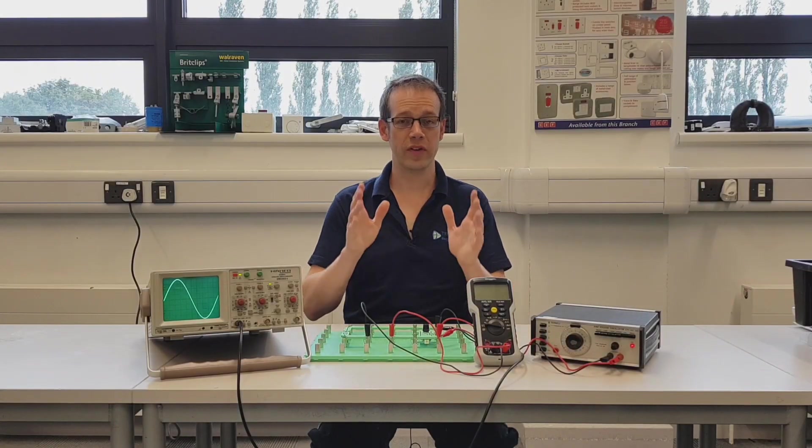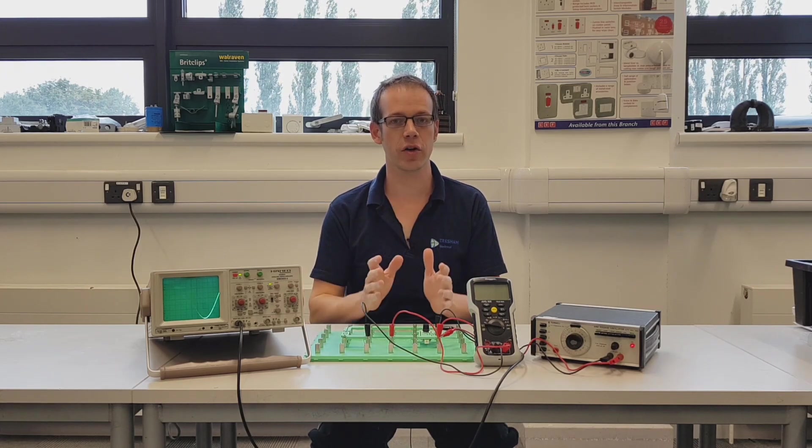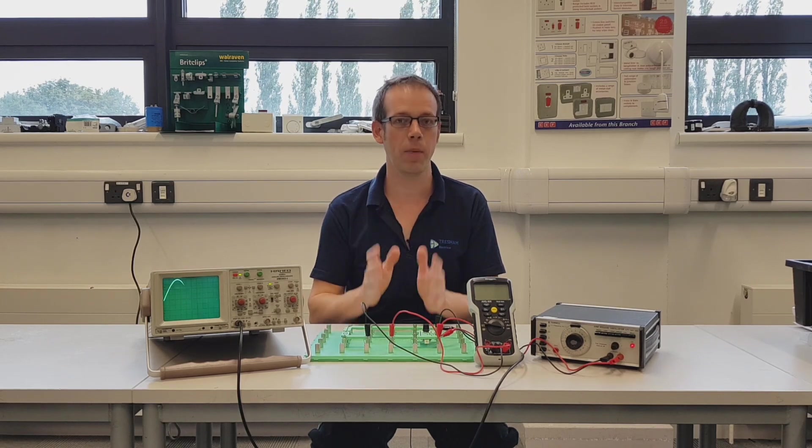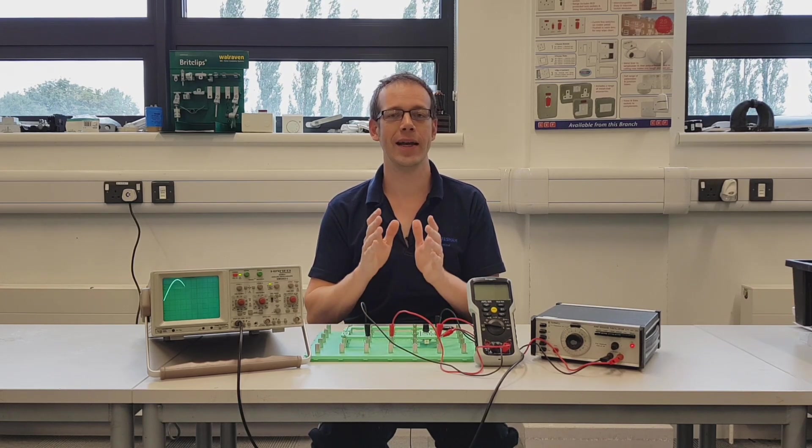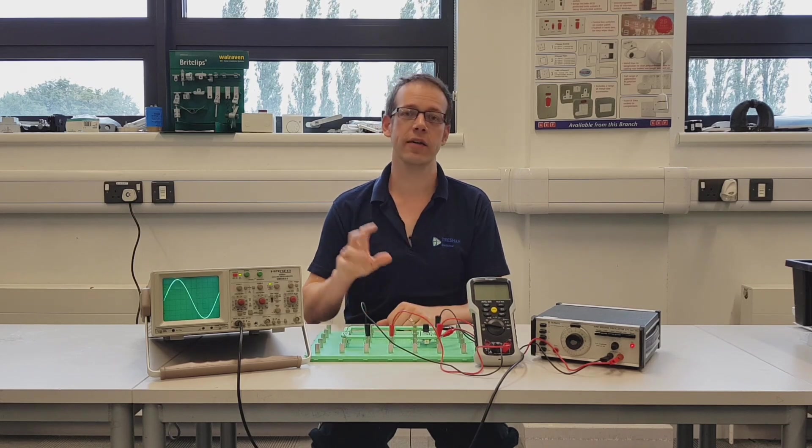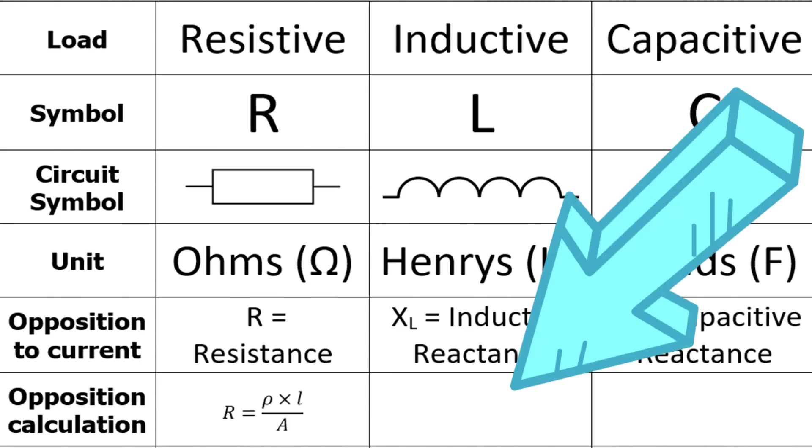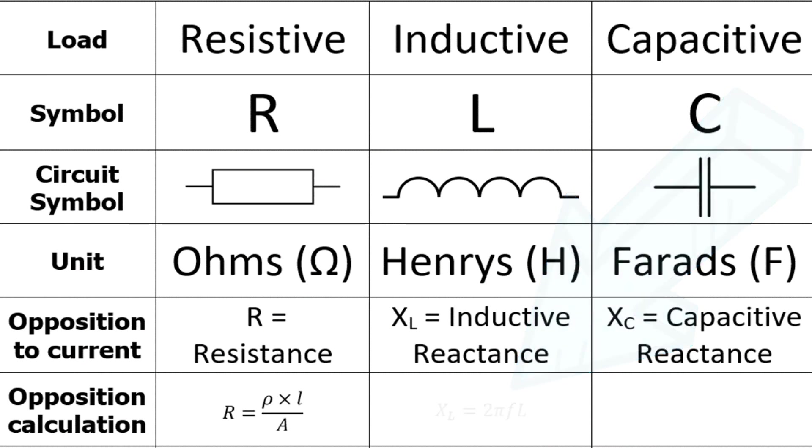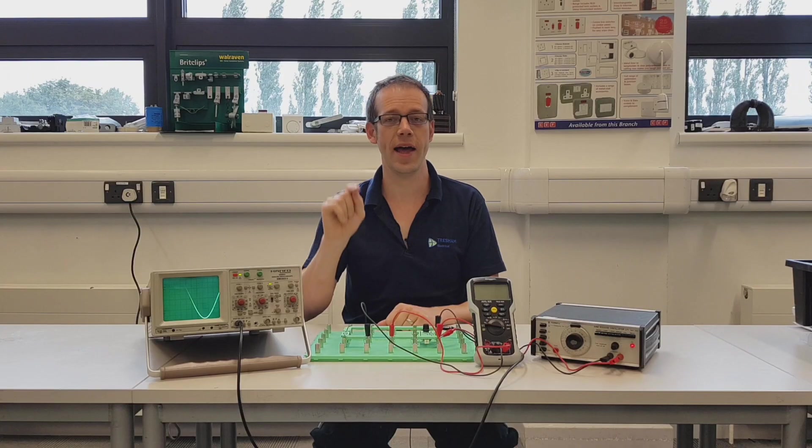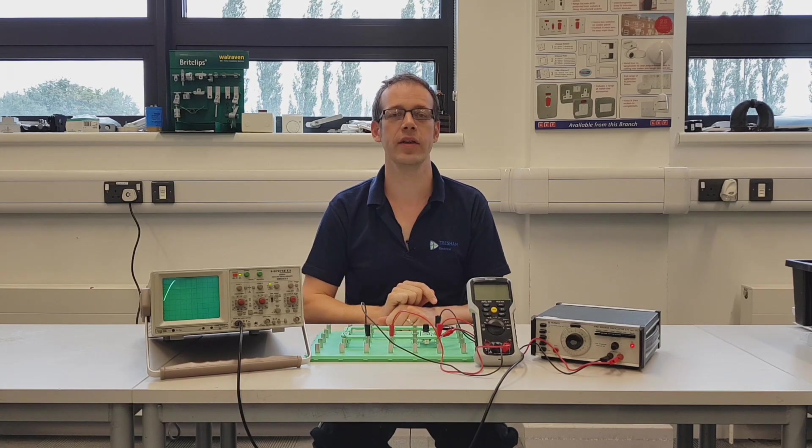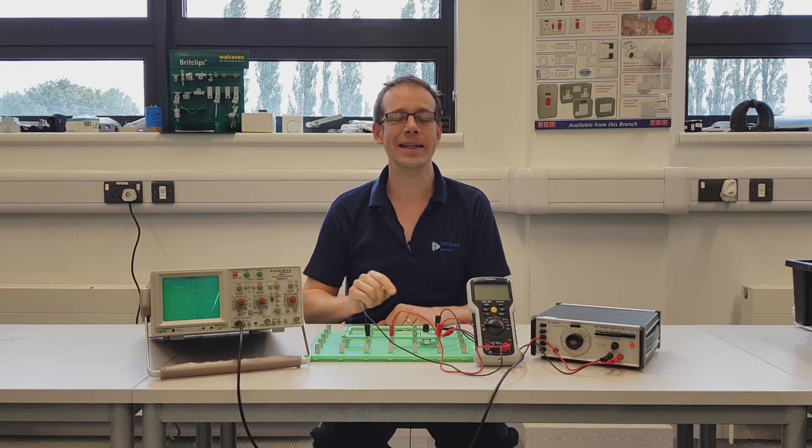In this video we've seen some really important information. We've seen the things that contribute to inductive reactance - remember that's the opposition to current flow created by an inductor. So now we can fill in this box in our worksheet and we're going to put in the formula: XL, bearing in mind that the L is capital but in the subscript, is equal to 2 × π × f × L, where f is the frequency of the AC waveform and the capital L is the inductance of the coil that we've connected up.